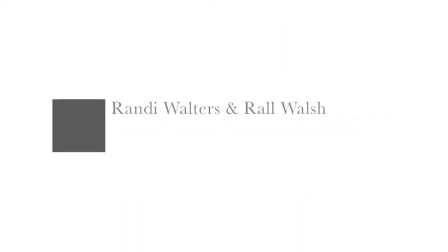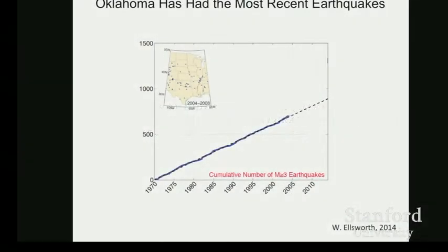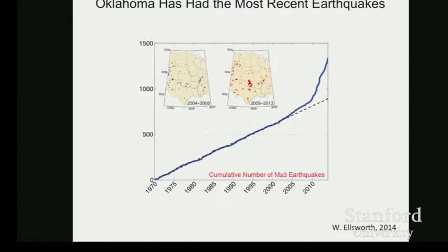I want to start by talking about these recent earthquakes we've been having. What I'm showing you here is the rate of earthquakes that have been happening in this part of the central US since modern seismic recording in the 1970s. And then what you'll very distinctly notice is if we add in the earthquakes that have happened more recently, we have a runaway earthquake occurrence going on.